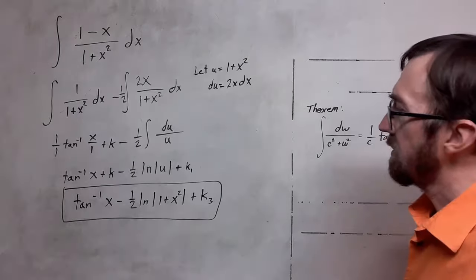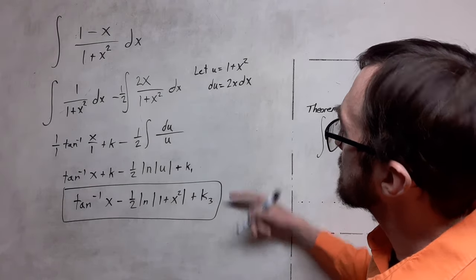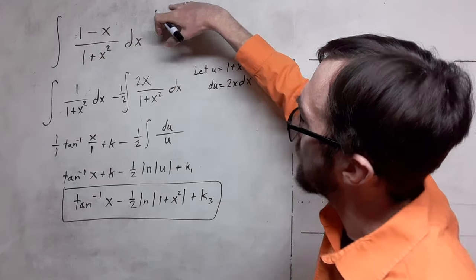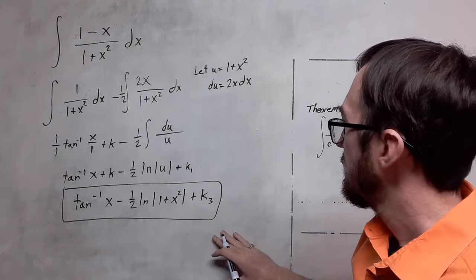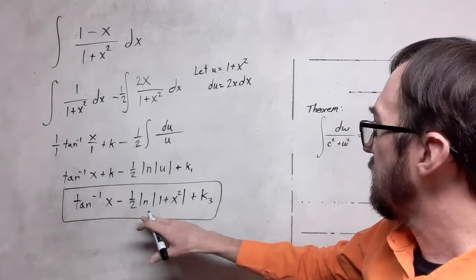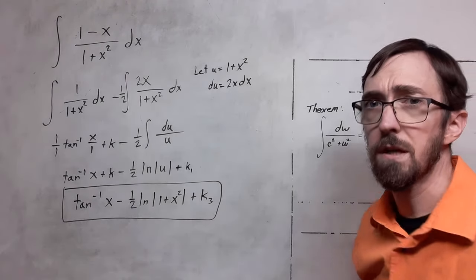And then this is going to be our final antiderivative here. So looking at this indefinite integral here, we have this as our antiderivative. So arctan of x minus 1 half log of 1 plus x squared plus some constant.